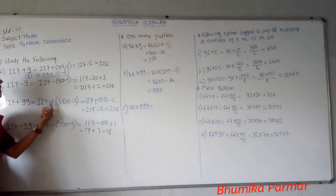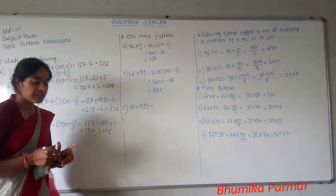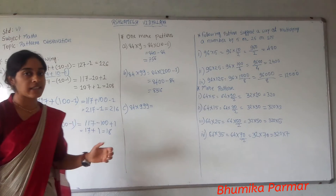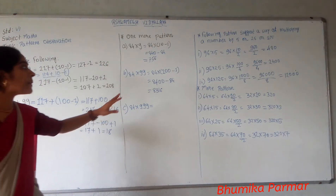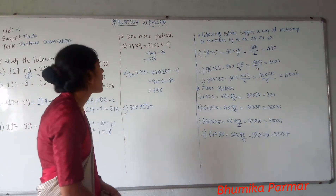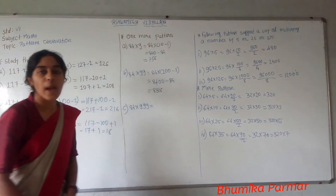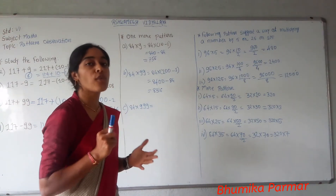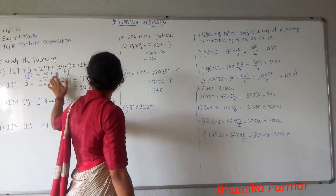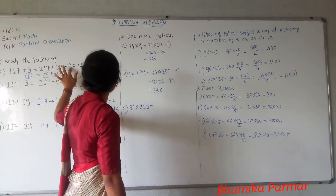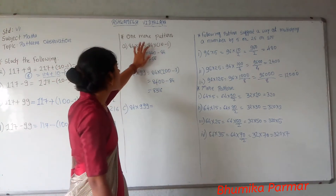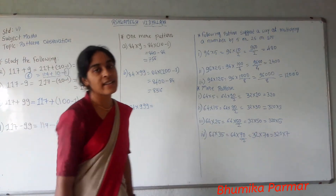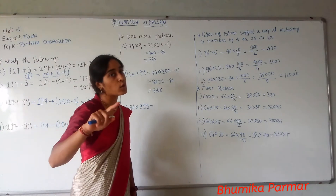Now, one more thing — what is the method for multiplication? For example, 84 times 9. Here, 9 has a different form: 10 minus 1. So 84 into 9 is written as 84 into 10 minus 1. This applies to 9, 99, 999 as well. We have only one subtraction using powers of 10: 10, 100, 1000. This is very useful.